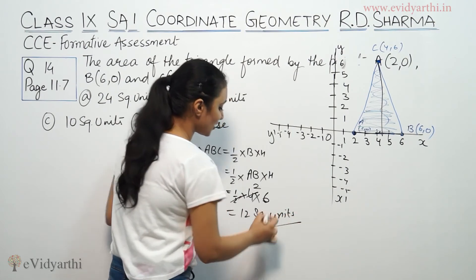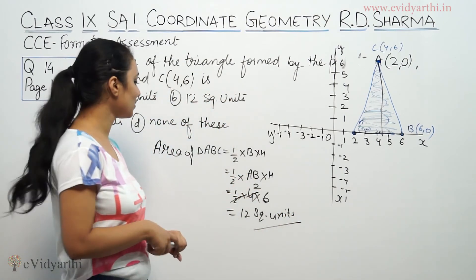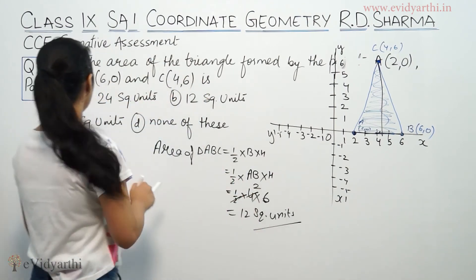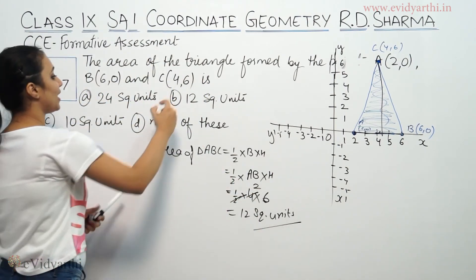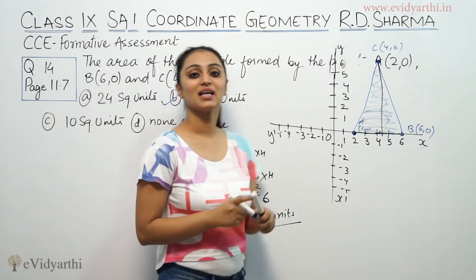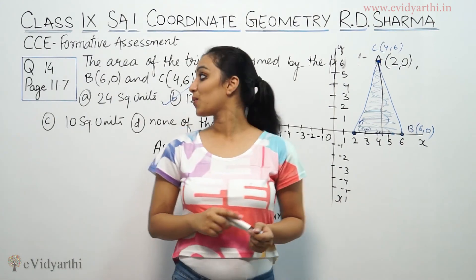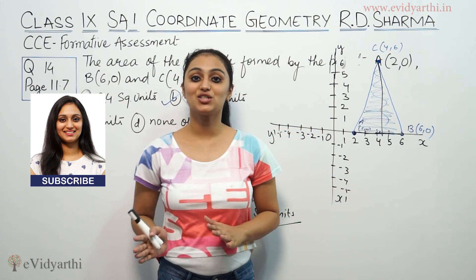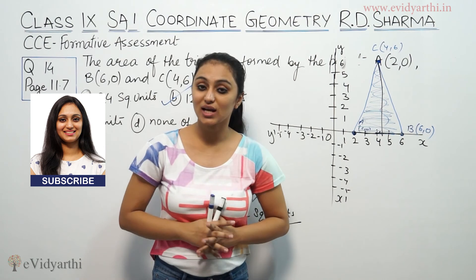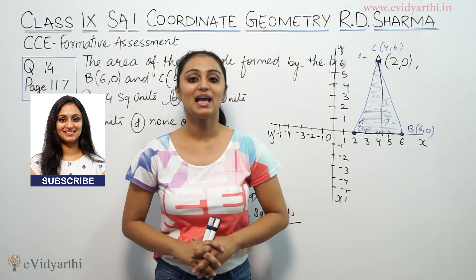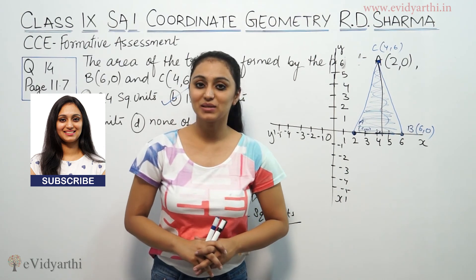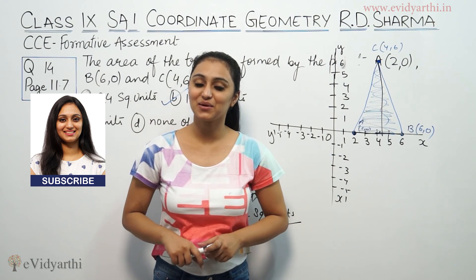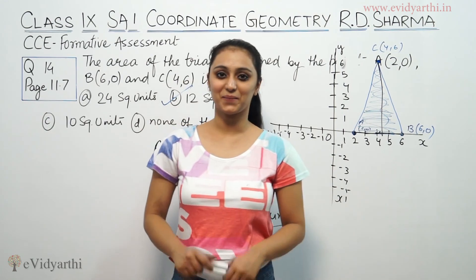So the answer is 12 square units. Part B is the correct answer. This was question number 14 from Adi Sharma — this type of question is often asked, so please do practice it well. In case of any doubt, please write to us, and watch the next video for more questions. Bye bye.